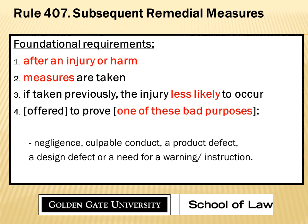The burden is on me as the opponent. I stand up: objection, subsequent remedial measures under 407. We make our way to sidebar. Your honor, I can meet the foundational requirements under this rule — one, two, three, and four, which is my argument that the proponent is trying to put on this evidence for the bad purpose. They're trying to show that we fixed the broken stairs after the fact, or that we changed a policy after the alleged injury. Conversely, the proponent is going to say these foundational requirements are not met, and the likely fight is: I am not offering this for that bad purpose — I'm offering it for some other acceptable purpose.